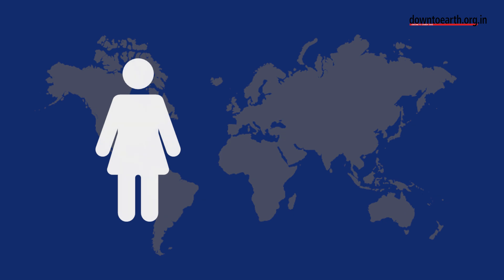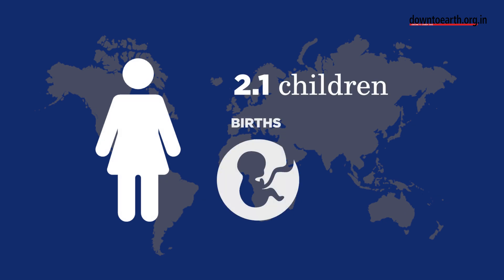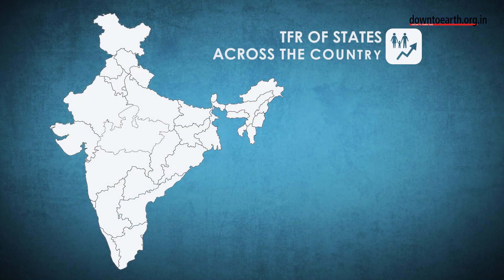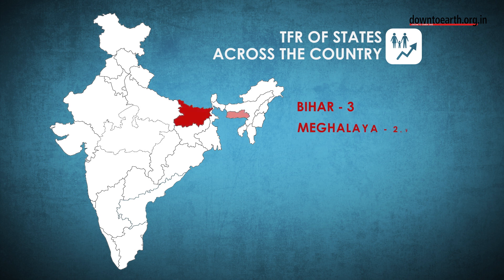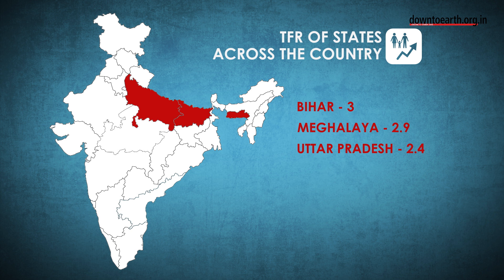A woman needs to have 2.1 children to keep the balance of births and deaths in a country. Some states in India still have a TFR above 2.1: Bihar with 3, Meghalaya with 2.9, Uttar Pradesh with 2.4, Jharkhand with 2.3, and Manipur with 2.2.